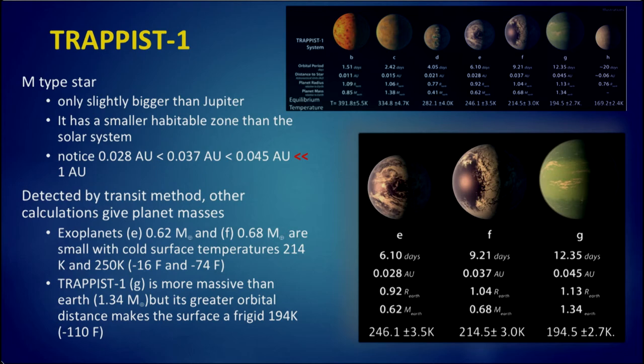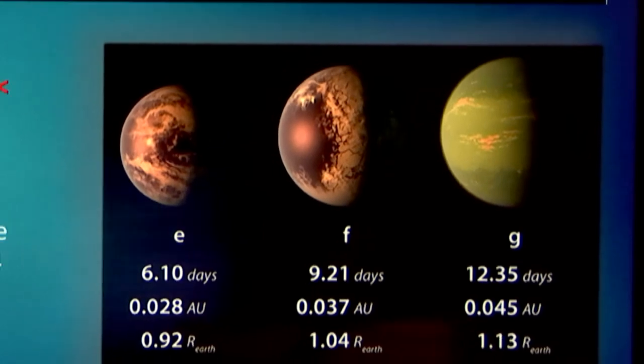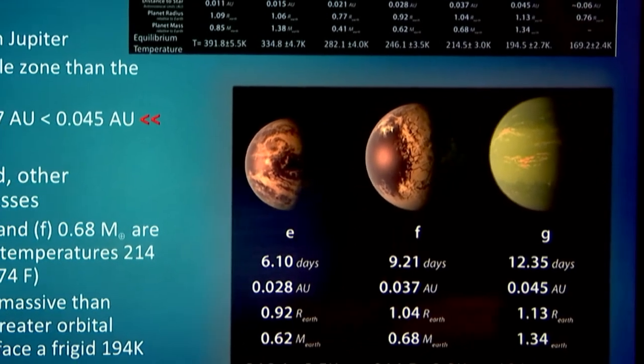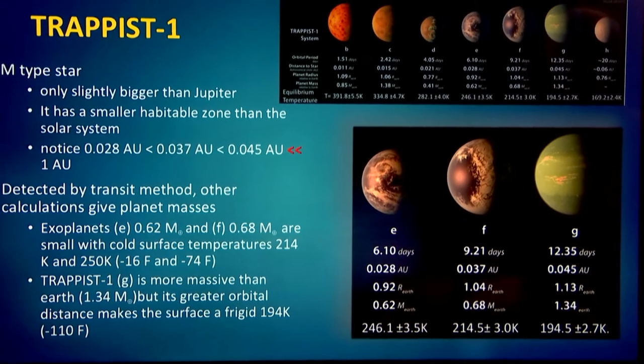Two of the exoplanets, E and F, are fairly small, about two-thirds of an Earth mass, and have cold surface temperatures based on the properties of their parent star, temperatures well below the freezing point of water. The exoplanet G is more massive than the Earth, about 1.3 times the mass of the Sun. But its greater orbital distance makes a surface of frigid minus 100 degrees Fahrenheit. So although we have planets nominally close to or in the habitable zone, they don't appear to be directly habitable.